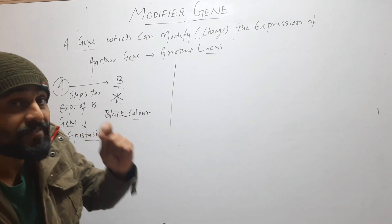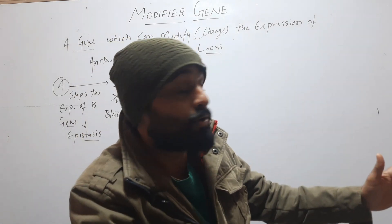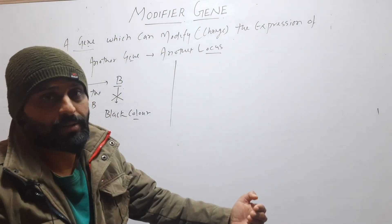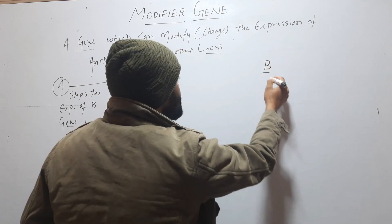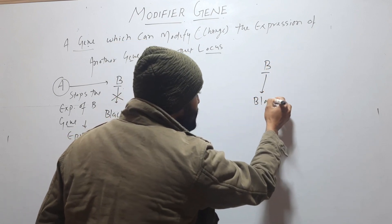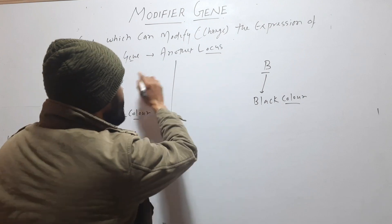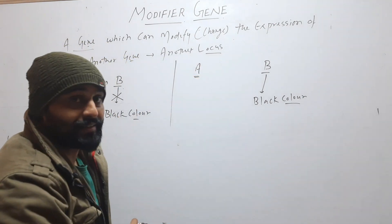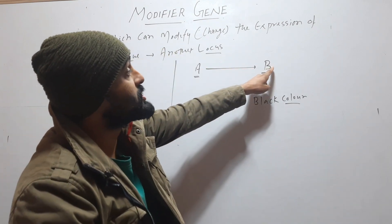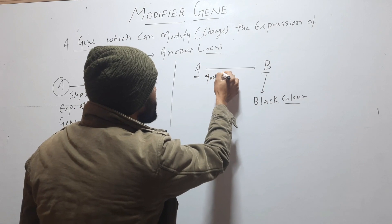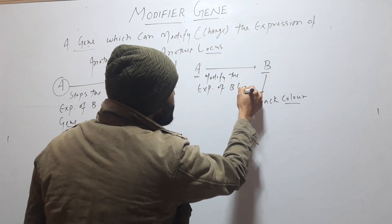But in case of a modifier gene, it doesn't stop the expression of another gene that is present on another locus — it just changes its expression. Suppose here we have a B gene, and this B gene produces black color. If another gene, suppose A, is present, this gene modifies the expression of the B gene.